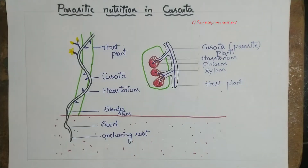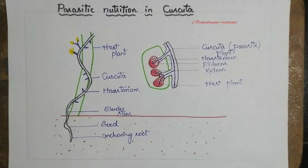In parasitic nutrition, the organism is called a parasite. The parasite will live inside the body of another organism, or on the surface of the body of another organism, and it obtains nutrition from it. The organism it lives on is called the host.